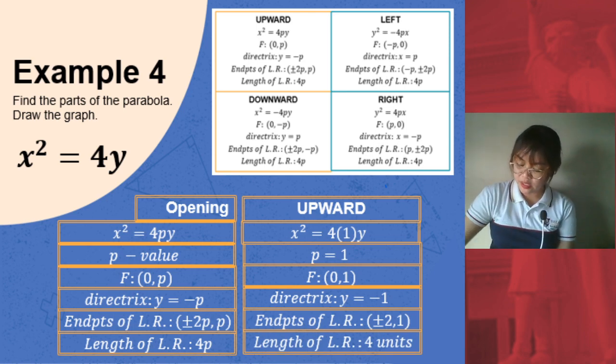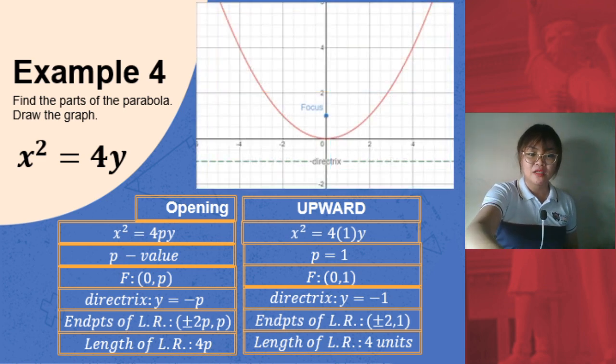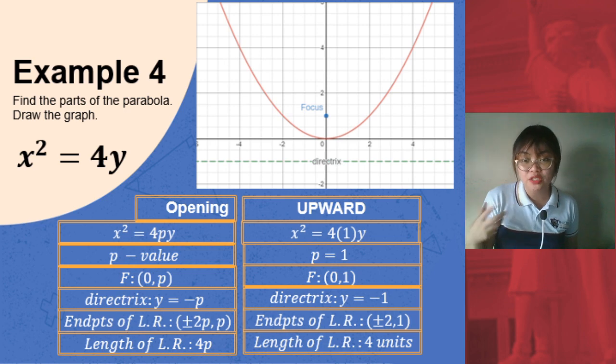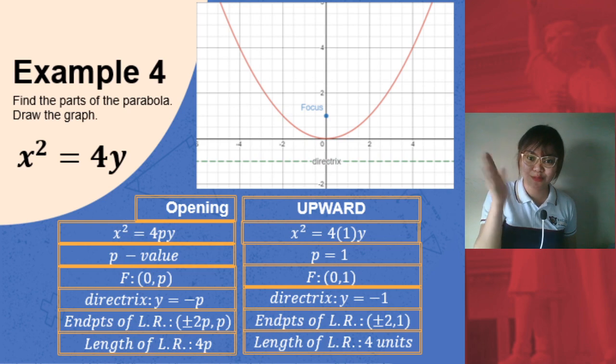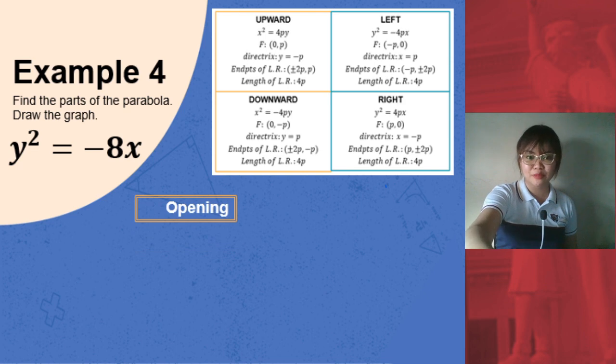So that's how easy it is, right? Of course, you are given a simple problem. Let's move on to the next example. Oh, by the way, yeah, this is a graph. You just use your Desmos in order to arrive at this. So during our synchronous discussion, I will show you how to use your Desmos for this. Next example. We have y squared is equal to negative 8x. Same process.